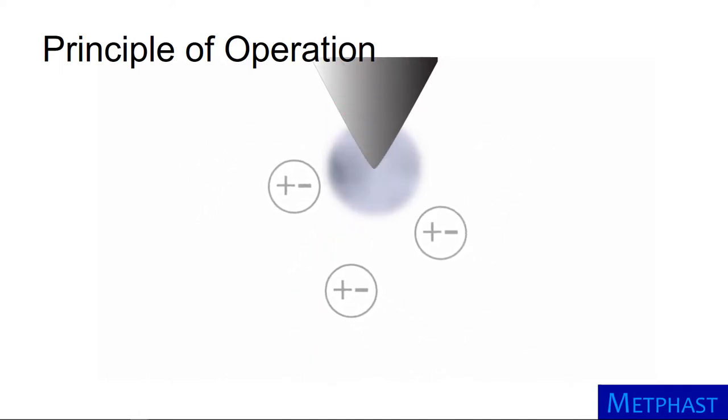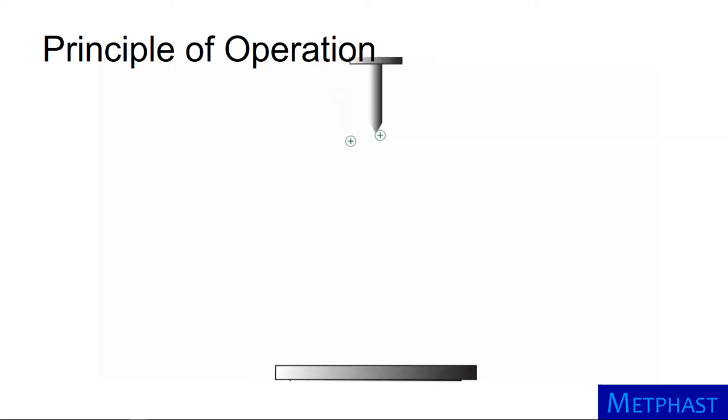Ions with charge opposite that of the needle, here negative ions, flow toward the needle, whereas those positively charged flow away from the needle along electric field lines.